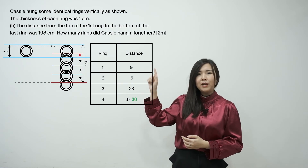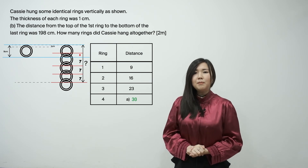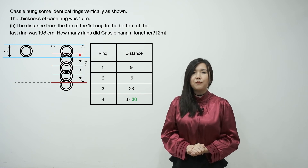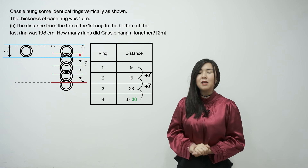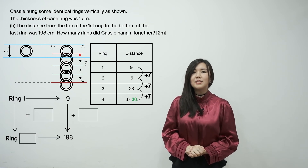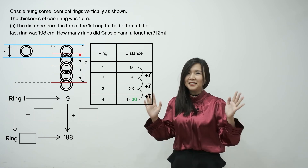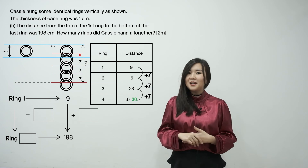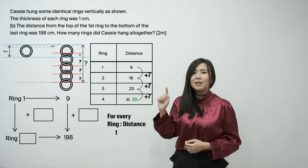Moving on to part B: the distance from the top of the first ring to the bottom of the last ring was 198cm. How many rings did Casey hang altogether? We see that the distance follows this pattern of plus 7, plus 7, plus 7 — which we identify as a constant difference at regular intervals. So let's apply the box and arrow technique. Since this is a constant difference at regular intervals question type, for every one more ring, the distance increases by 7.